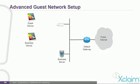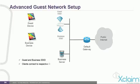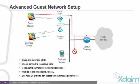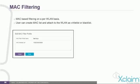Cloud Manager has a Client Isolation feature, which means two wireless LAN devices connected to the same wireless LAN are not able to talk to one another. Advanced Guest Network Setup allows you to have a printer on your wired network accessible only to corporate clients and not guest clients. It will only allow guest traffic to exit to the internet via the default gateway, while business SSID traffic can access both internal and external resources. It also allows you to use MAC filtering.